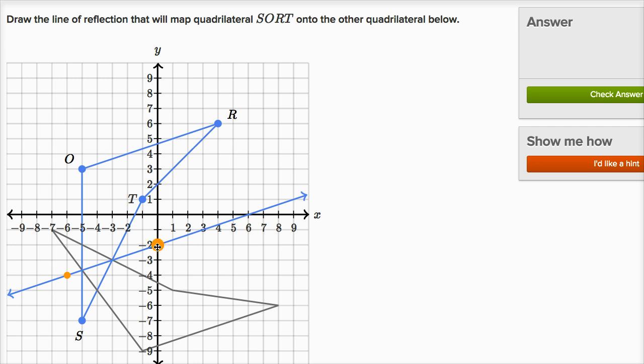because this is one step to the left, three steps up, and then to get from here to there, one step to the left and three steps up. So this looks pretty good. This looks like I have drawn the line of reflection.